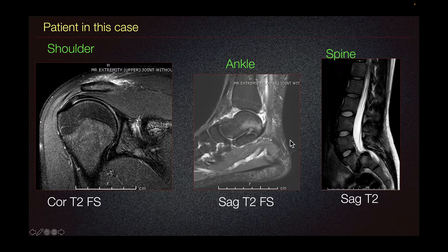The ankle MRI of the same patient demonstrates a tibiotalar joint effusion and also nonspecific bone marrow edema at the posterior margin of the talus.